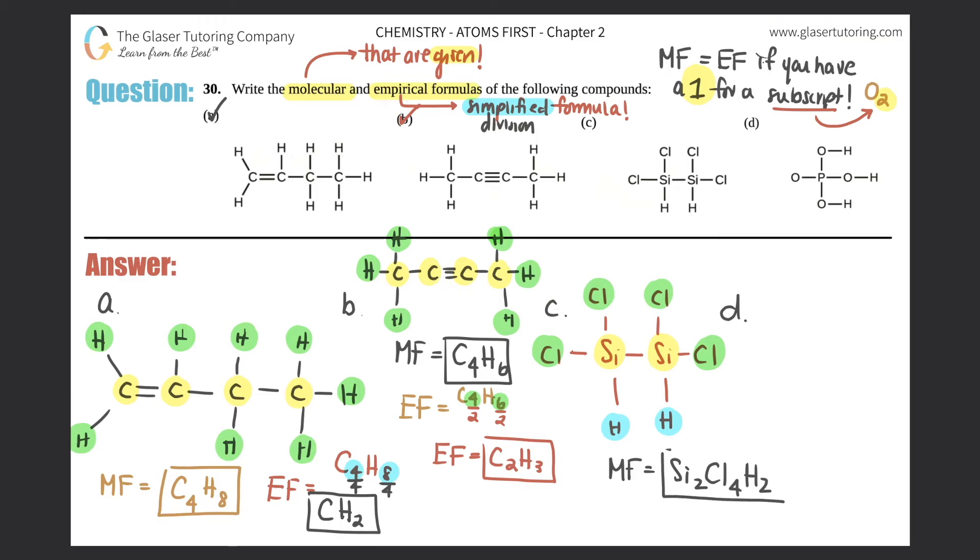So that would be your molecular formula. Box that answer off. Now let's see if we can simplify it. You guys probably know the answer, right? So I have Si2Cl4H2. Is there any number that you can simplify the two, the four, and the two? Yes there is, and it is number two. So I can divide each one of these by two.